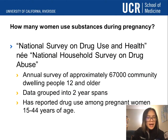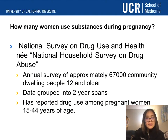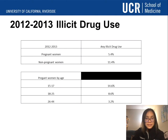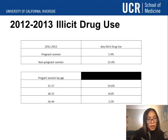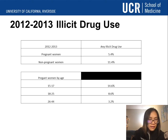How many women actually use substances during pregnancy? The National Survey on Drug Use and Health surveyed approximately 67,000 community-dwelling members aged 12 and older, grouping data into two-year periods and reporting drug use among pregnant women aged 15 to 44. For pregnant women with any illicit use between 2012 and 2013, it was reported at 5.4 percent, and the rate was heaviest in younger women between the ages of 15 to 17.